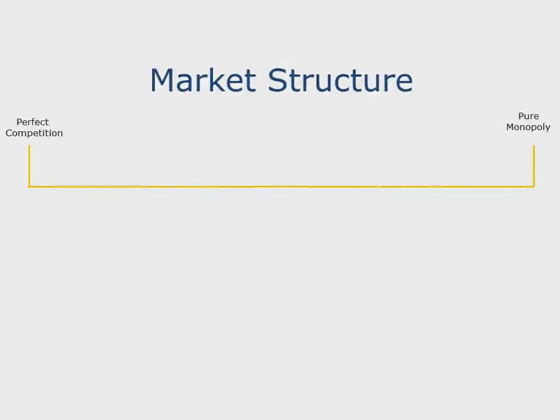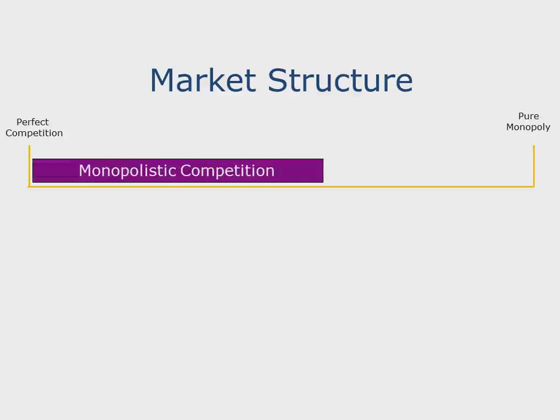With perfect competition as one extreme, we have a lot of buyers and sellers selling homogeneous products. Close to it is the monopolistic competition, where we have a lot of sellers who are selling differentiated products. Then close to monopolistic competition comes the oligopoly, then we have the duopoly, then monopoly, and finally the pure monopoly.